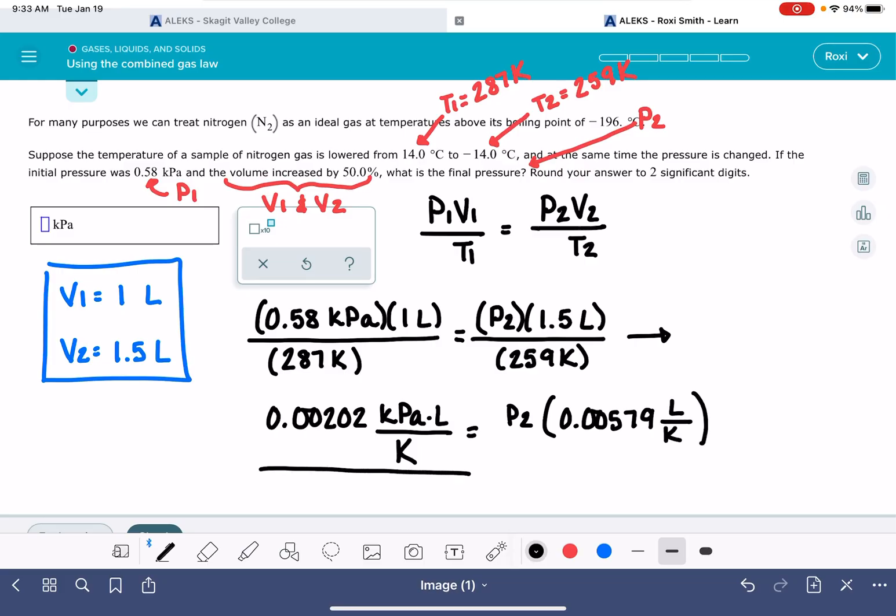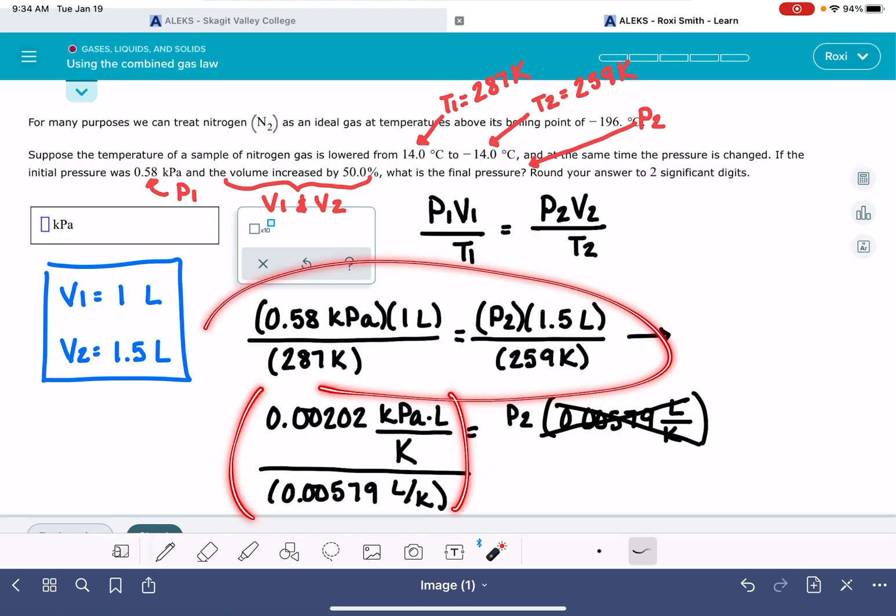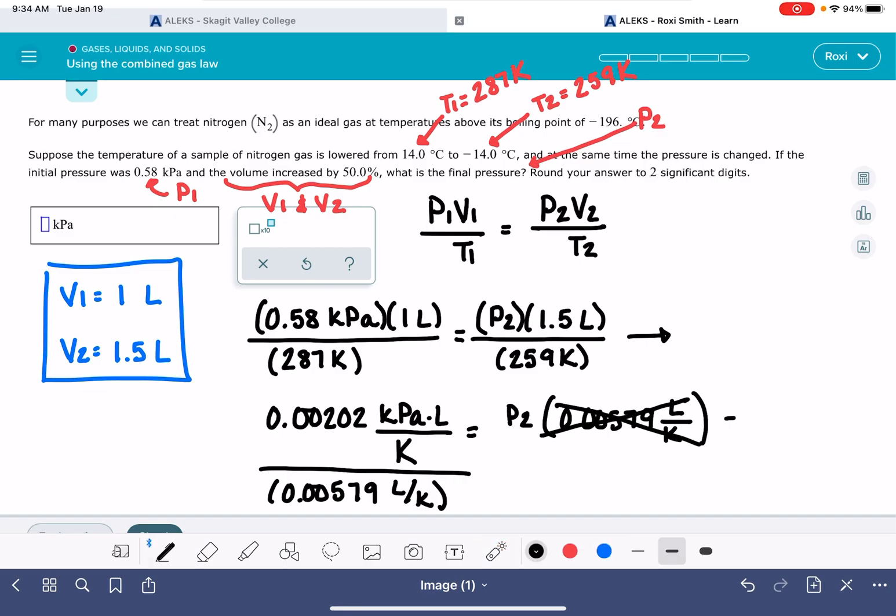So I'm going to divide both sides by this 0.00579 liters over kelvin so that I can cancel that out and solve for P2. I definitely don't recommend doing this in a couple of steps for ALEKS because ALEKS is really a stickler about sig figs and rounding and things like that, so you probably want to just shove all of this into your calculator all at once. 0.00202 divided by 0.00579, this gives me a P2 of 0.34. He wants it to two significant figures, so 0.35.